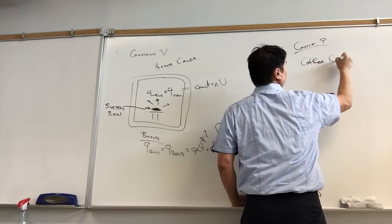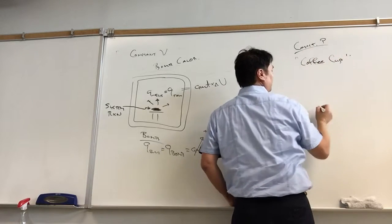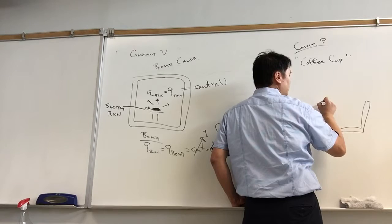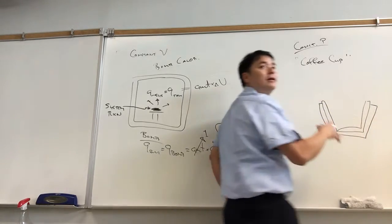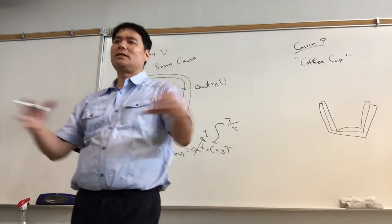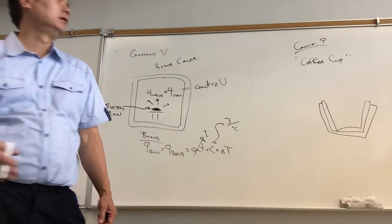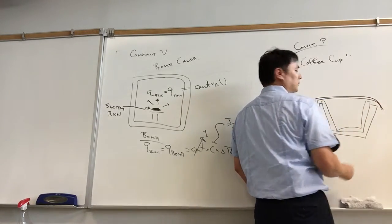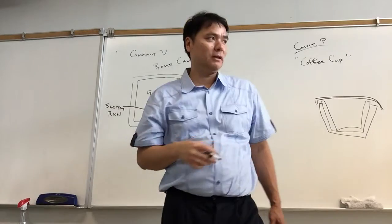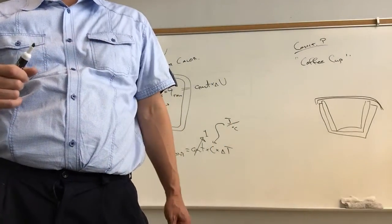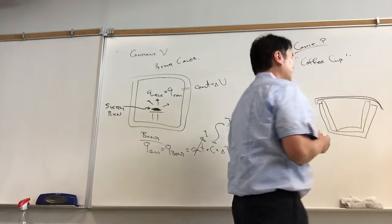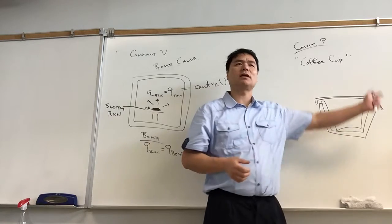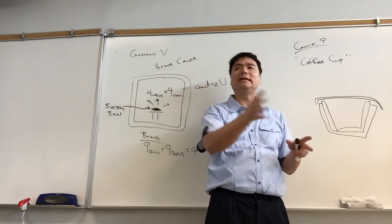Tomorrow we're doing a constant pressure experiment. The coffee cup calorimeter is double-insulated to prevent too much heat from escaping, but heat is still going to leak out. So we have to calibrate it to compensate for all that heat leaking out. As the coffee cup system absorbs heat, what is the temperature change? That's dictated by the solution inside.